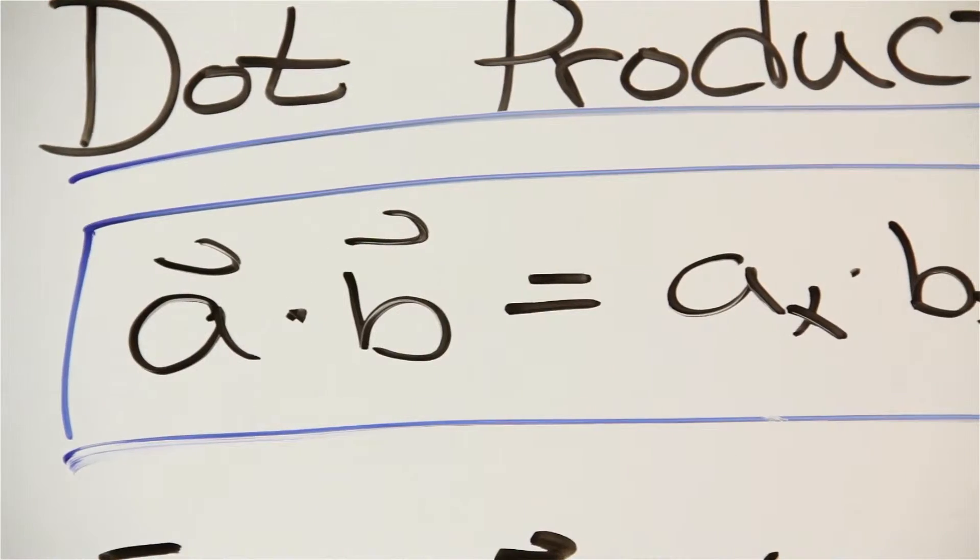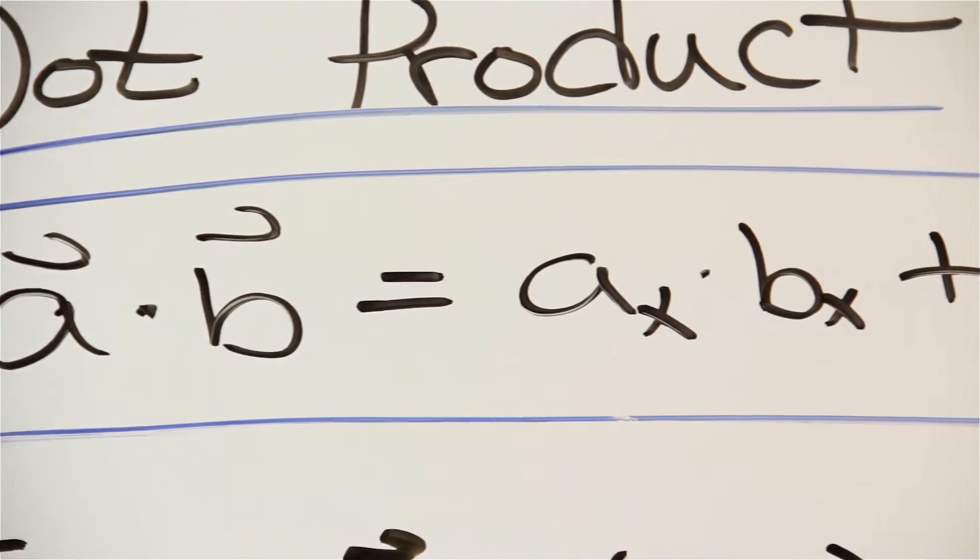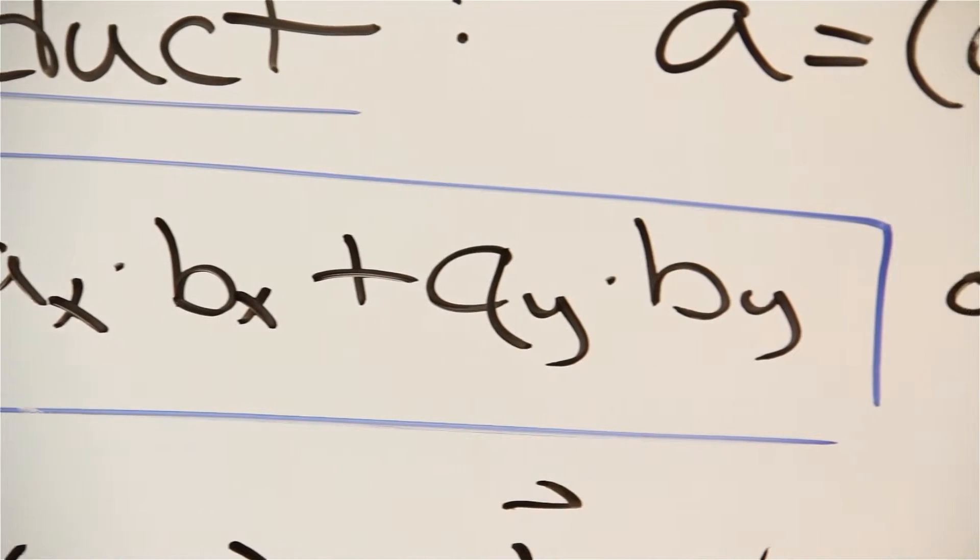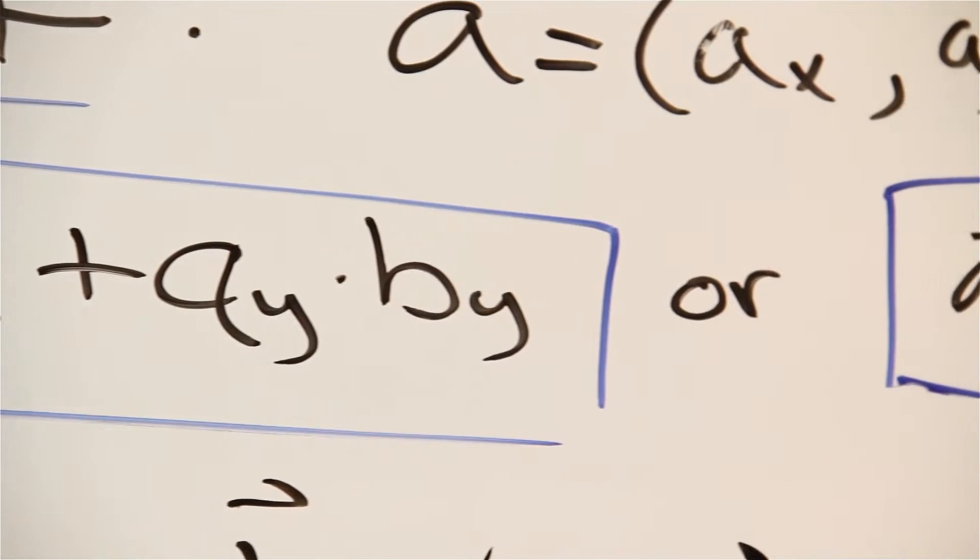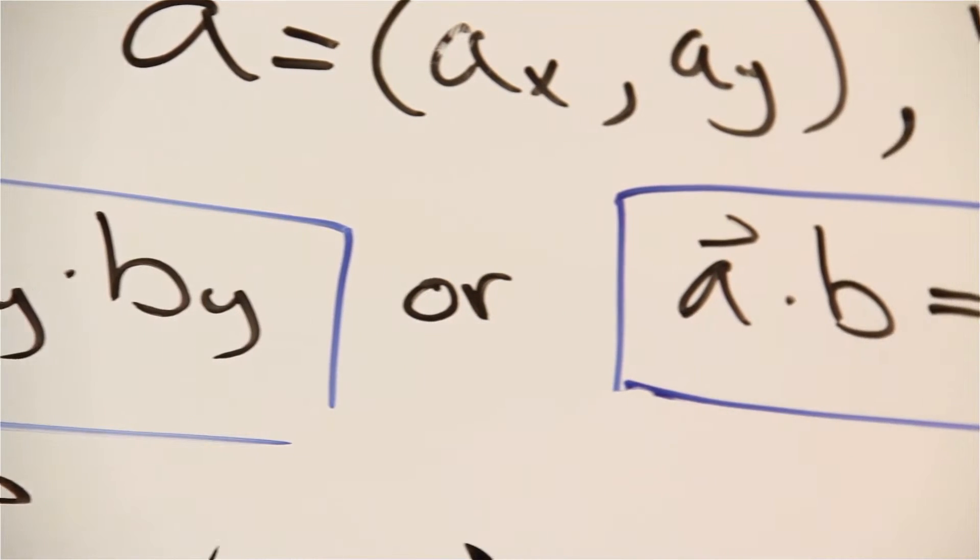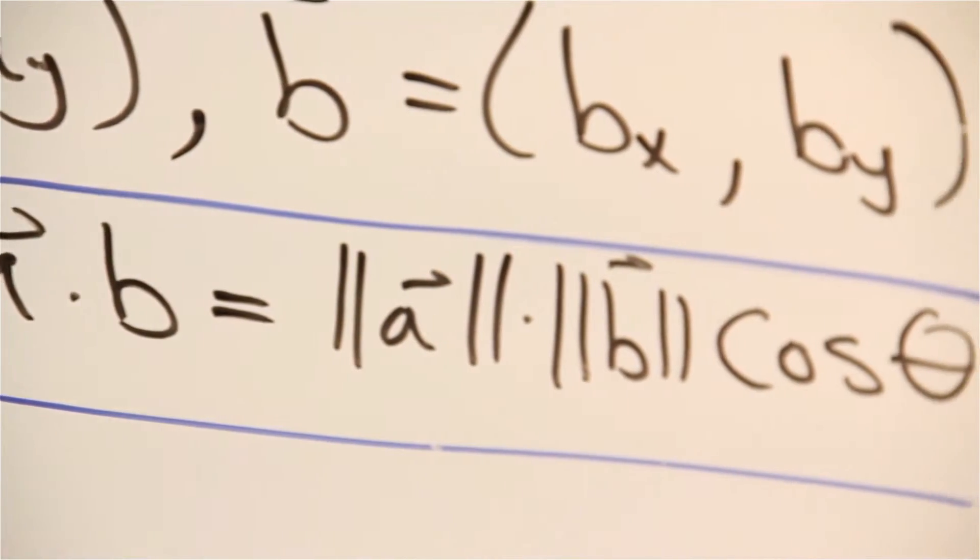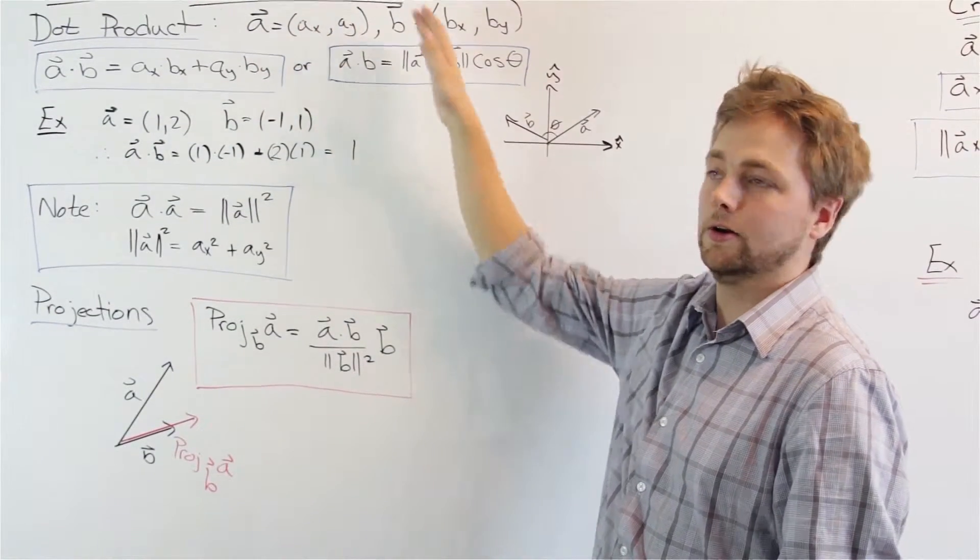The first definition we're going to give for the dot product will be this. If we're given vectors a and b, the dot product will be equal to the x component of a times the x component of b added to the y component of a times the y component of b. If we were dealing with vectors in higher dimension, we would just continue this pattern on and on.